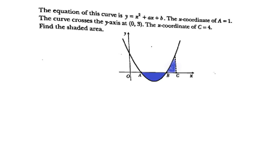For this question, the equation of the curve is y equals x squared plus ax plus b. There are two unknowns in the question, so our first task will be looking for the unknowns. The x-coordinate of A is equivalent to 1, and then it crosses the y-axis at (0, 3). The x-coordinate of C is equivalent to 4, and by using these coordinates we will be able to get some values.